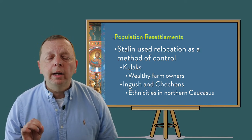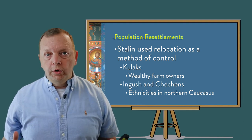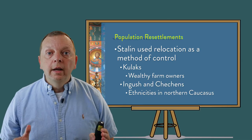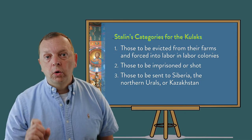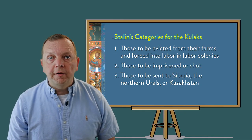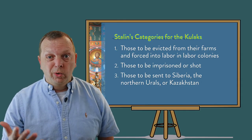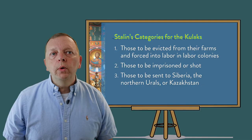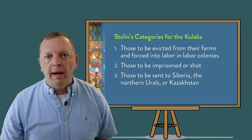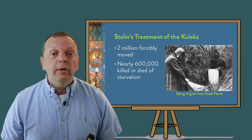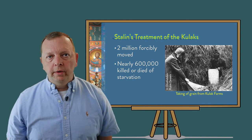Another way that Soviet leader Joseph Stalin attempted to keep control was through forced population resettlements, such as what happened to the kulaks. Since the Soviet Union was a communist country, it was decreed that all property should belong to the state, and the process of bringing property into the state is known as nationalization or collectivization. This put the Soviet government on a collision course with the kulaks — relatively wealthy farmers who owned large farms. In 1930, Stalin ordered the kulaks to be categorized into three groups: those evicted and forced to work in labor colonies; those who would be imprisoned or shot; and those sent to Siberia, the northern Urals, or Kazakhstan after having their farms seized. The result was nearly two million kulaks displaced, on top of 600,000 people who died during the period.